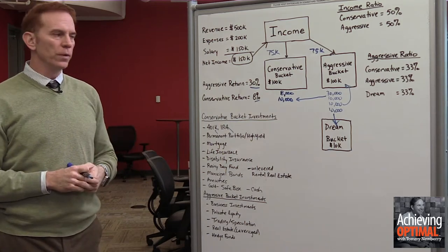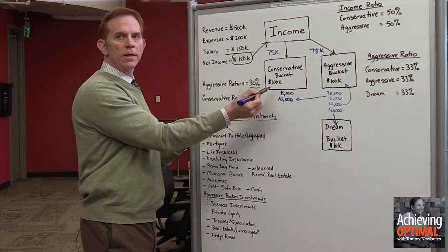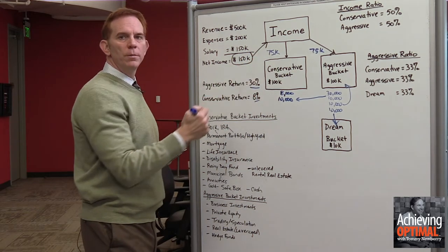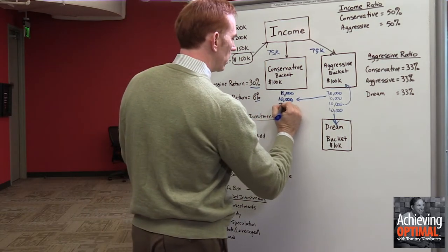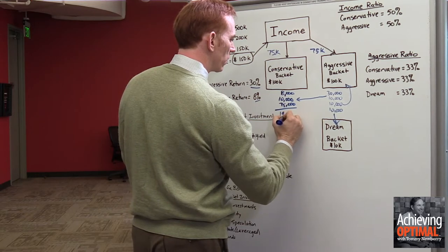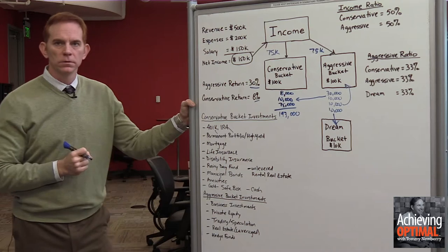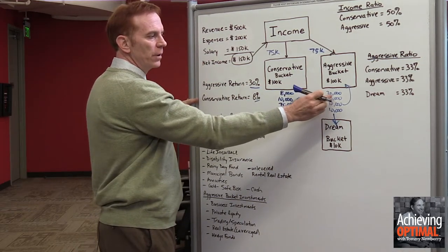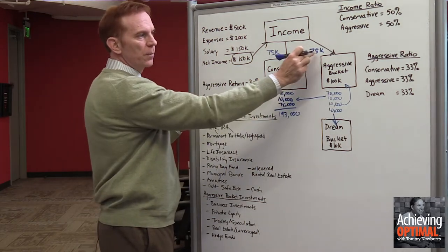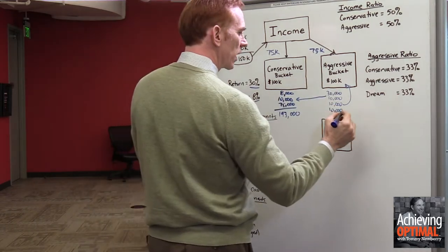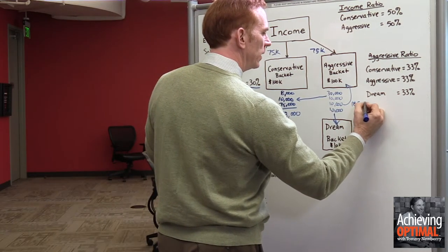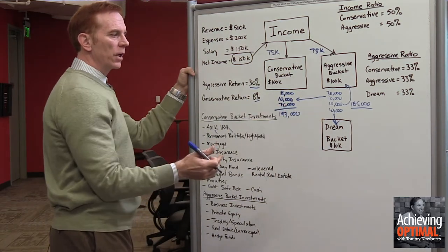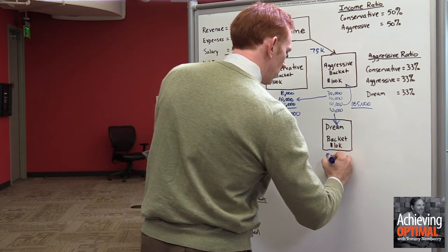Let's see where we stand at the end of the year. Our conservative bucket started with $100,000, picked up $8,000 in return and a $10,000 allocation from the aggressive bucket, plus we contributed $75,000 — so at the end of the year, the conservative bucket now has $193,000 in it. Our aggressive bucket had $100,000, made $30,000 of which we reinvested $10,000, and picked up another $75,000 from income — so the aggressive bucket now has a balance of $185,000. Our dream bucket, which had $10,000, got a $10,000 allocation from the aggressive bucket, so it now has a balance of $20,000.